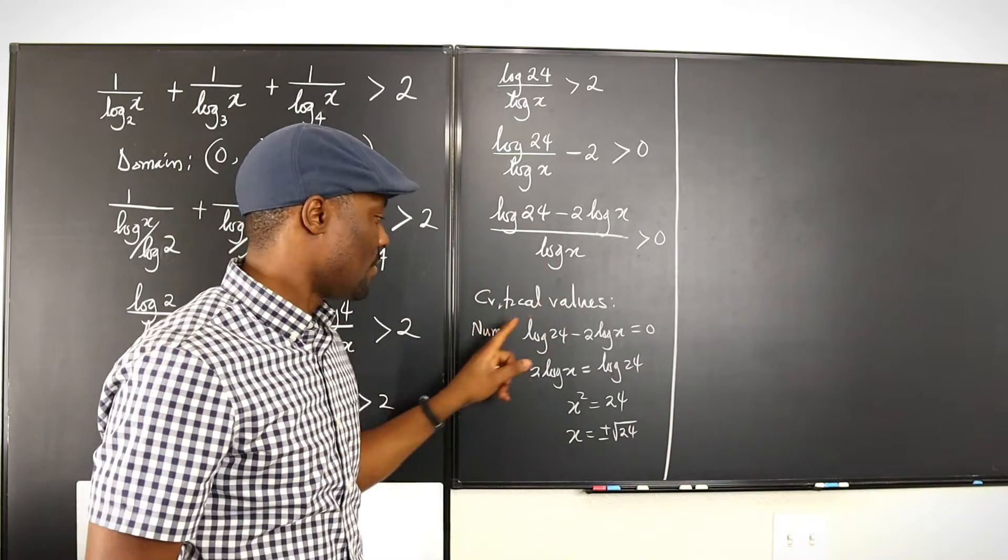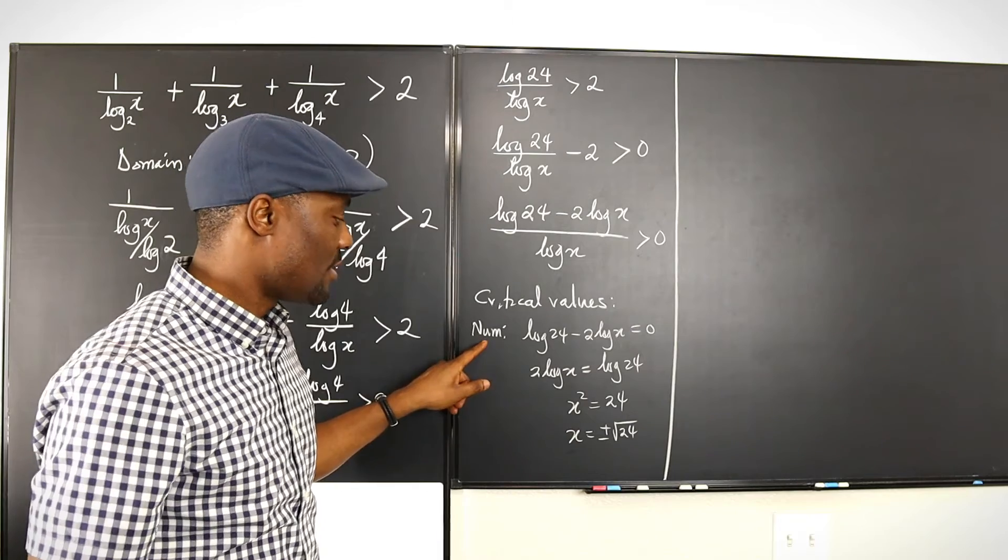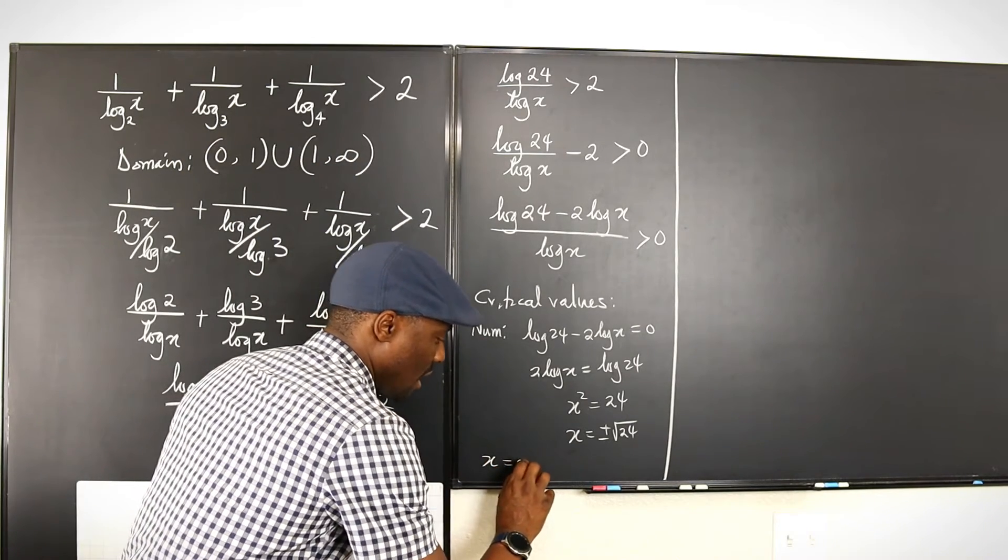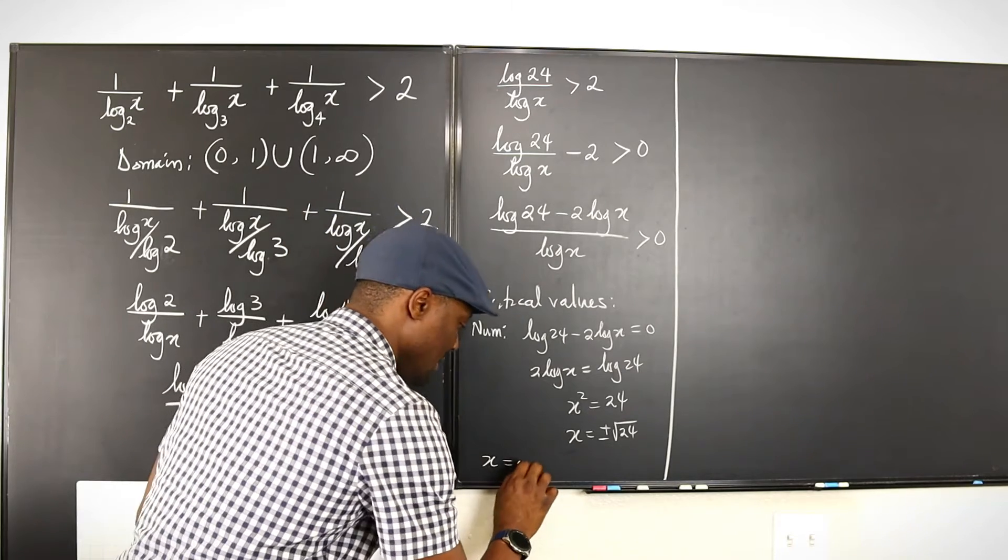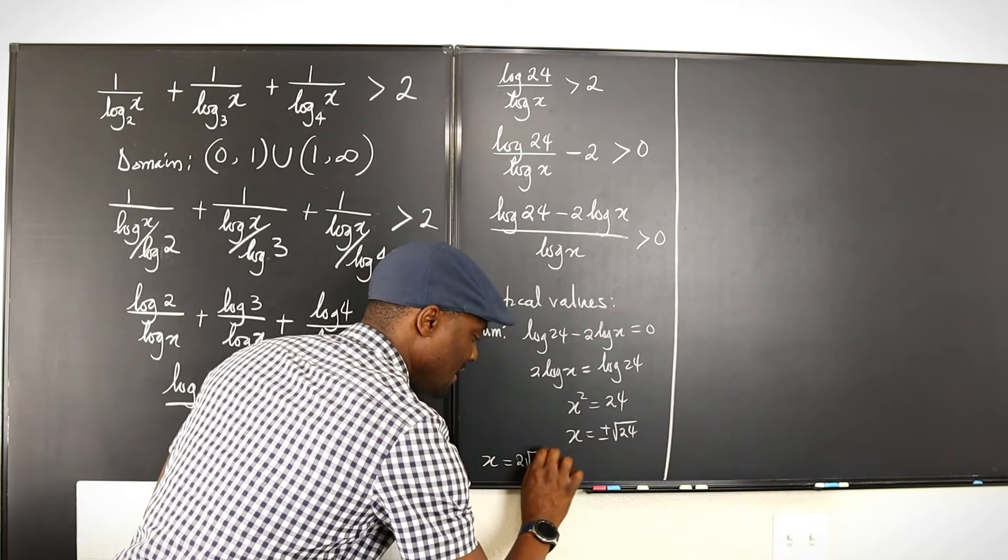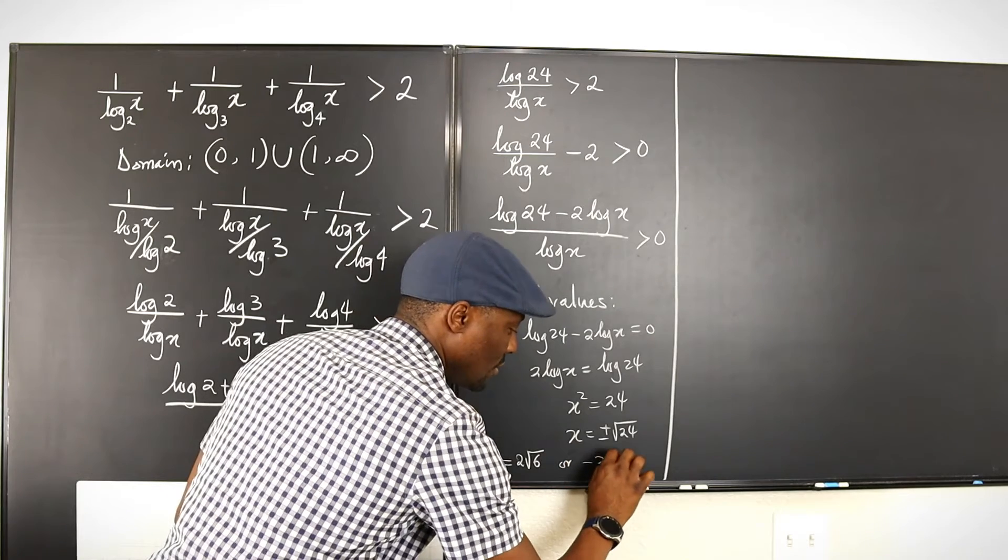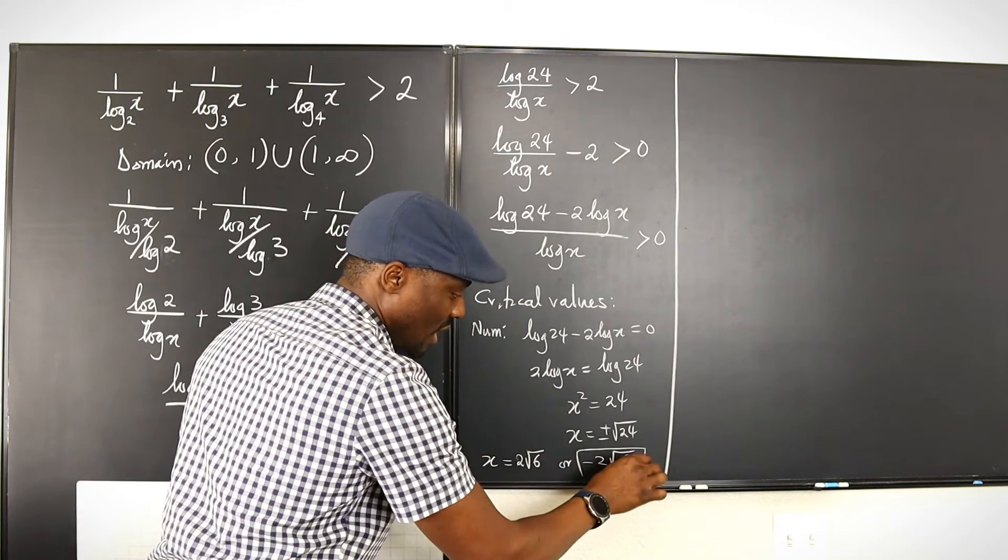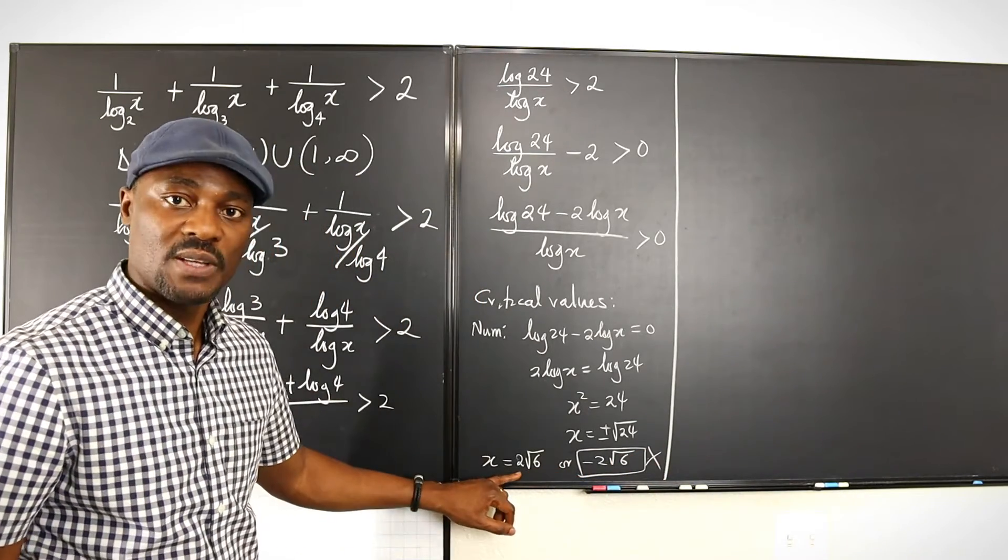So the only option we're going to take will be the positive option in this case. The second part is the denominator. We just found the values for the numerator. So we have x equals the square root of 24 is 2 root 6. So we're going to have 2 rad 6 and negative 2 rad 6. And like we said, this is not a part of the domain, so we do not choose it. This is the only thing we choose.